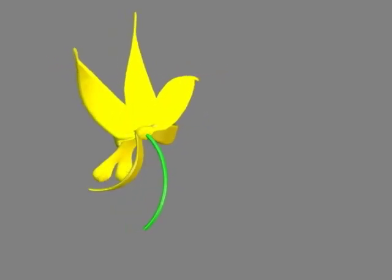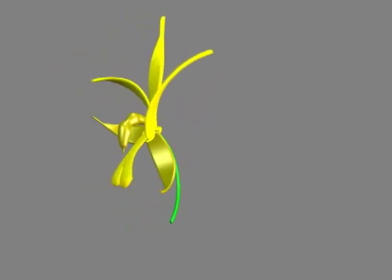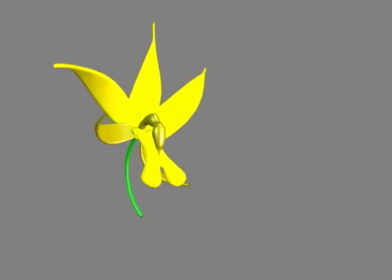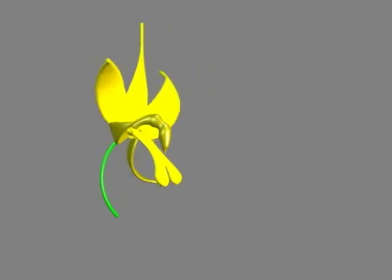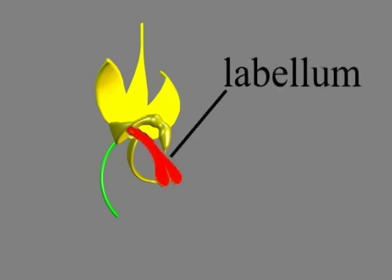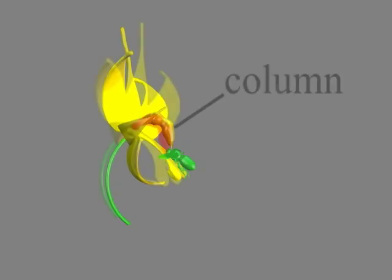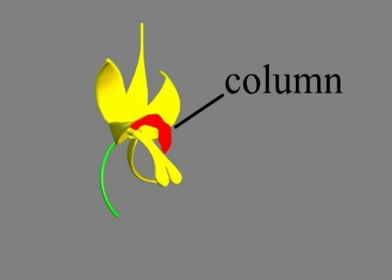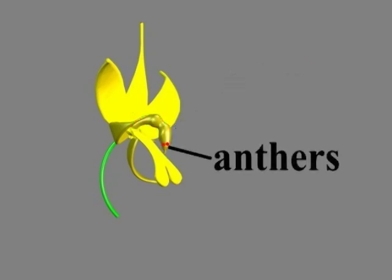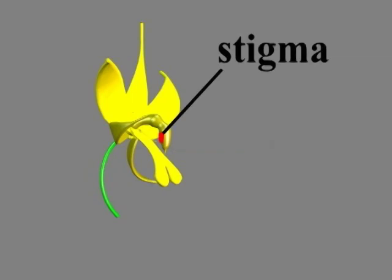This 3D model represents the Mormodes orchid and shares features and structures common to most orchids. The two features we are interested in are the labellum and the column. The labellum is a modified petal that often has a dramatic shape, and visiting insects land on the labellum. The column contains the reproductive organs — the tip of the column contains the anthers, hidden under a cap, while the stigma is on the underside of the column behind the anthers.